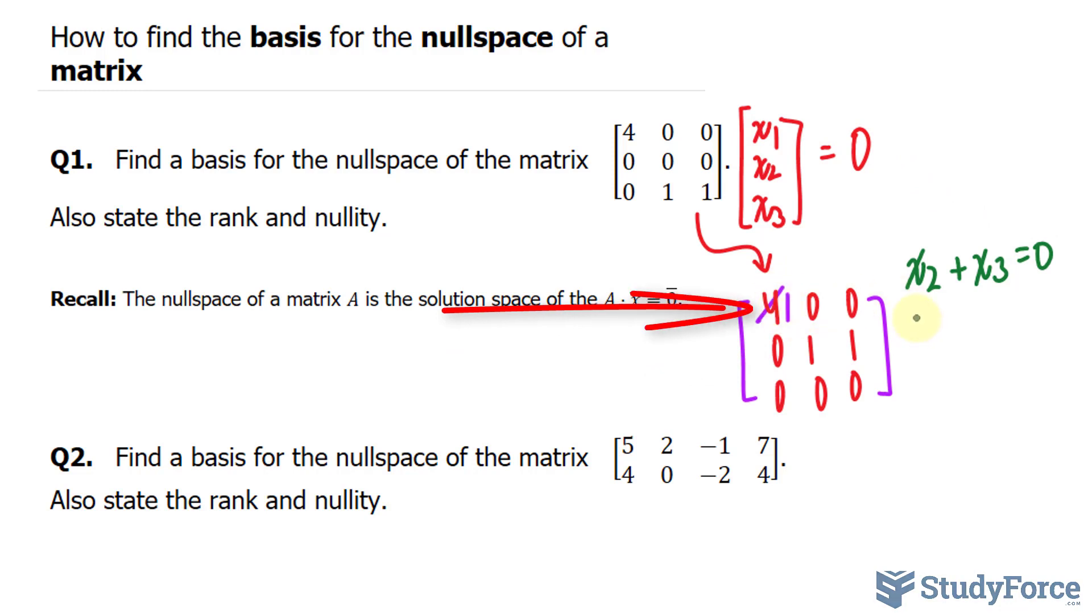Take a look. Another equation will look like this where we have x sub one is equal to zero. And since we don't have a leading one for the column that represents x sub three, we can actually assign x sub three to any letter that we like. I'm going to call it t. So we can rewrite this first equation as x sub two is equal to negative t, x one is equal to zero, and x sub three is equal to t.